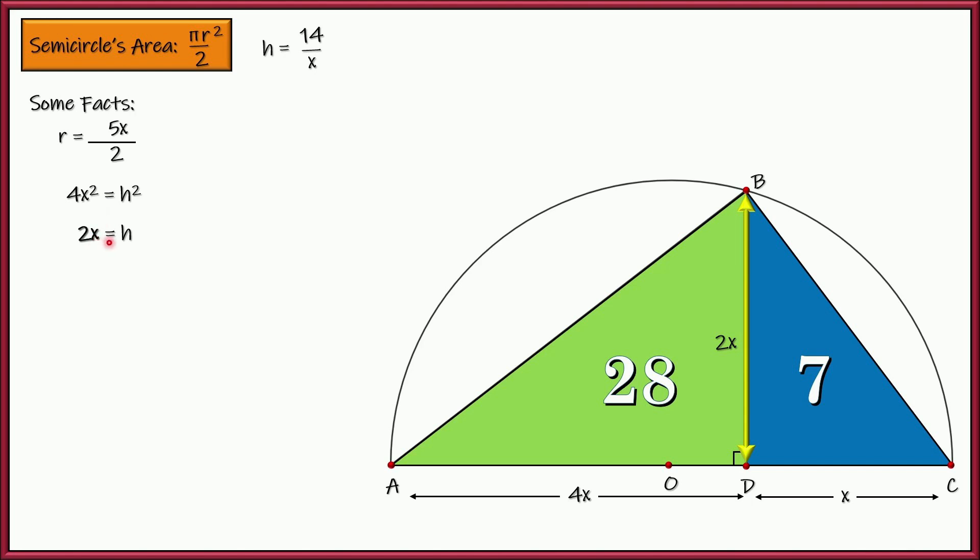All right. So now I know h is equal to two x. I also know h is equal to 14 over x. So if we solve that, if we can set those two things equal to each other, then we can figure out what x equals, right? So multiply both sides by x, divide by two. So x squared is seven. So x is, of course, then the square root of seven. All right. We know what x is. Man, that's pretty cool.